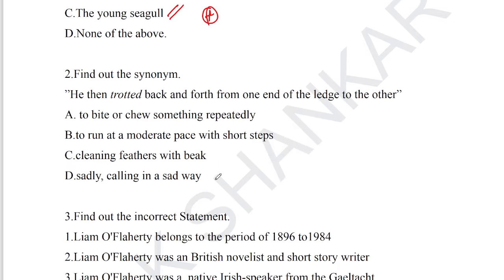Question number 2: find out the synonym. 'He then trotted back and forth from one end of the ledge to another.' Trotted back and forth — the synonym is 'to run at moderate pace with short steps.' So option B is the answer for question number 2.